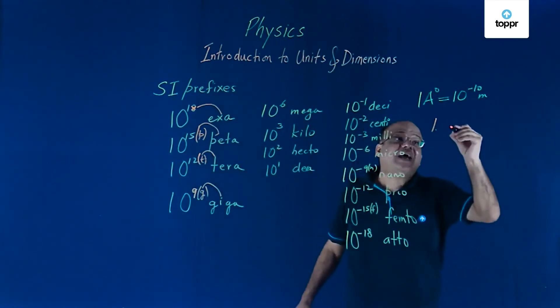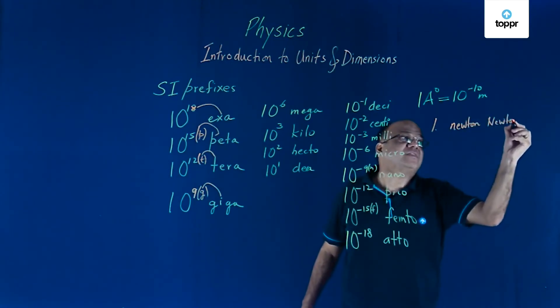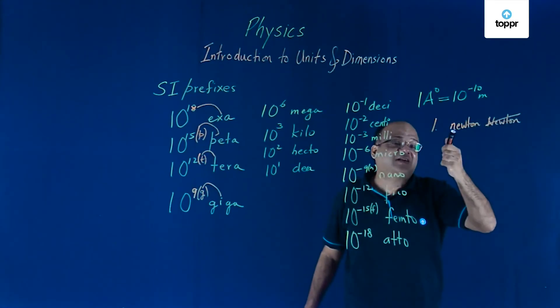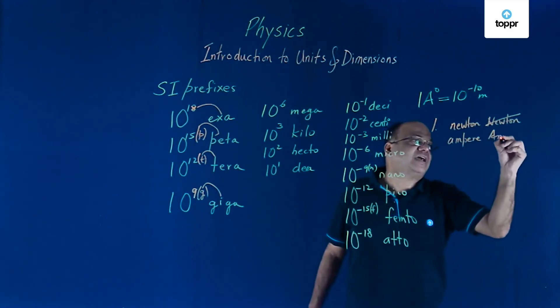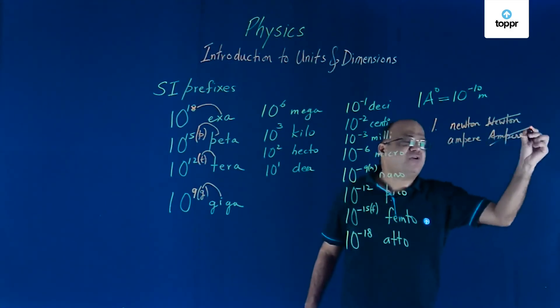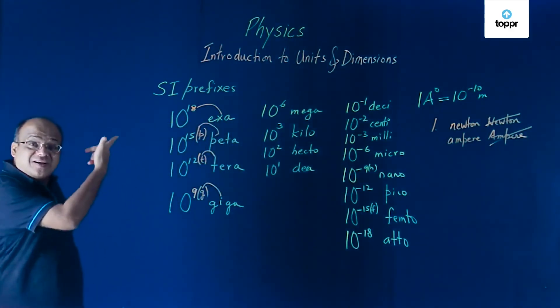When we write unit of force, we write newton like this. We don't write Newton, that is the name of the scientist, not like this, you write like that. Ampere, unit of current, you write like this, not like this. So full name of units, named after a person, do not start with a capital letter.